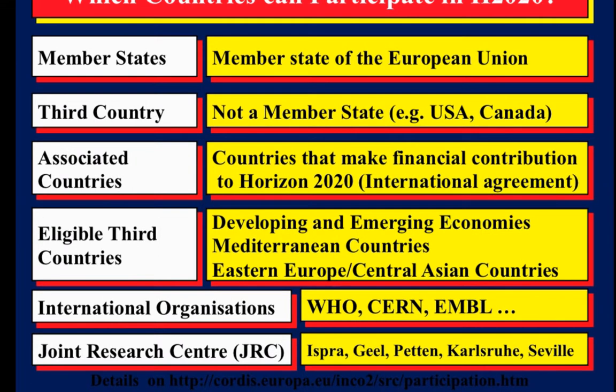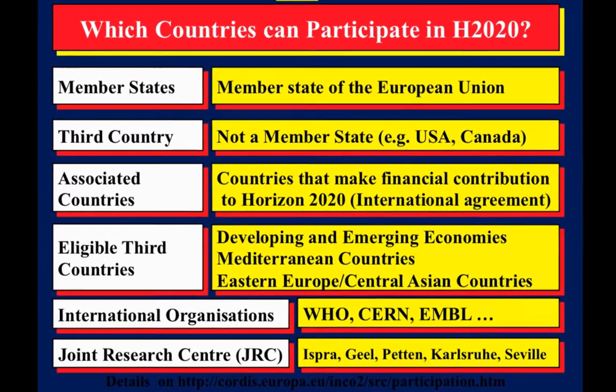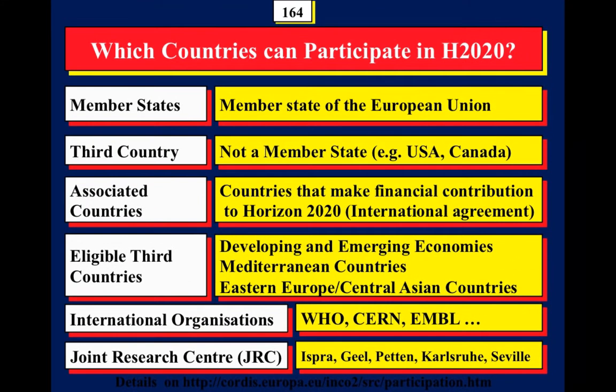The European Commission itself has seven research institutes called the Joint Research Centres. They can participate and receive funding, but they are not classified as a German or Irish partner — they are classified as a category called the JRC.